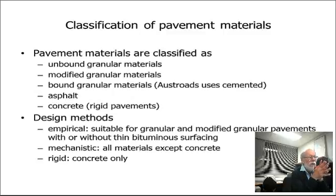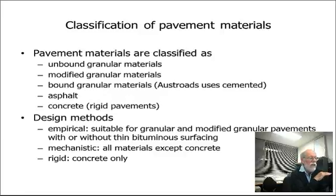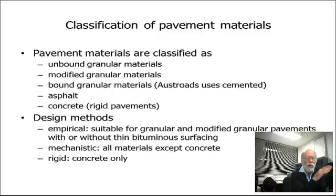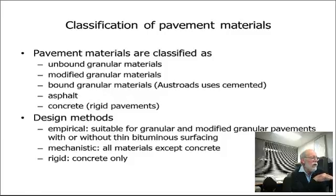We then have what we call a modified granular material. A modified granular material is characterised exactly the same as an unbound granular material. They may have a small amount of cement, a small amount of another pozzolanic material, or any other material just to improve the properties and bring it up to what an unbound granular material property should be. But they're not bound and they're not designed to be bound.